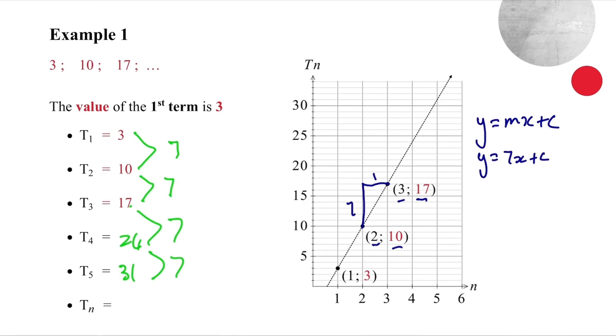To work out the c value, we would substitute any points. So I would choose the easiest point one, three. So three is the y value, x is equal to one. So we work out that c equals negative four.